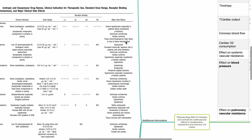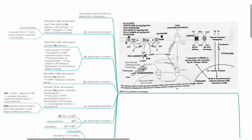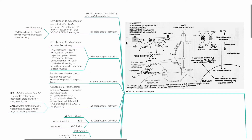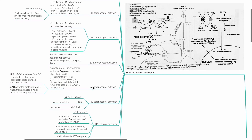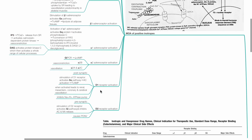Additional information: mechanisms of action of positive inotropes are included here for completion. All beta-adrenergic receptors work via the Gs pathway. Alpha-1 adrenoceptors work via the Gq pathway. Alpha-2 adrenoceptors work via the Gi pathway.